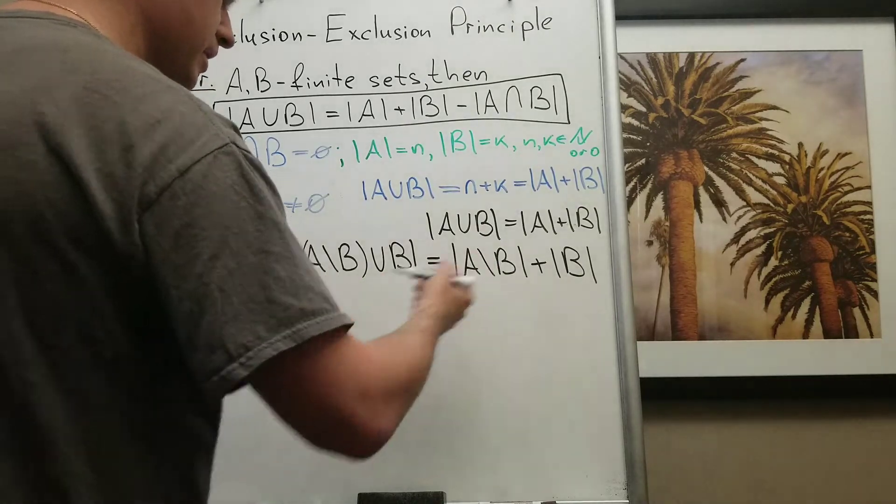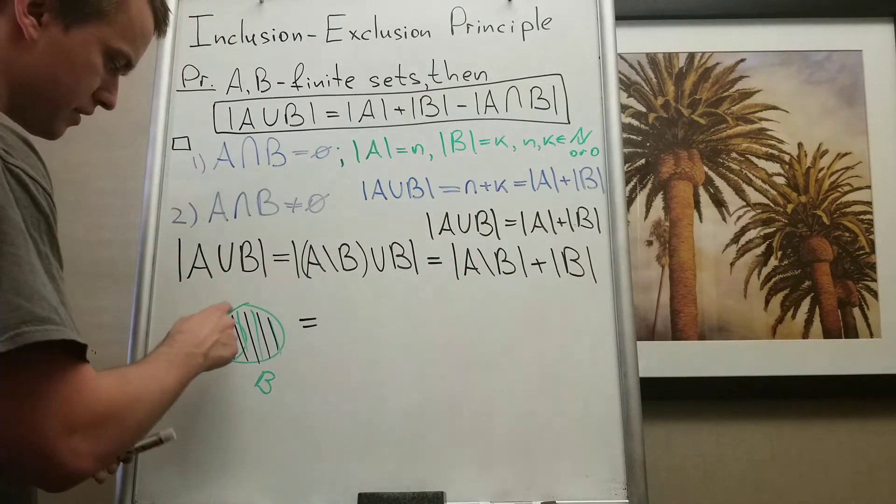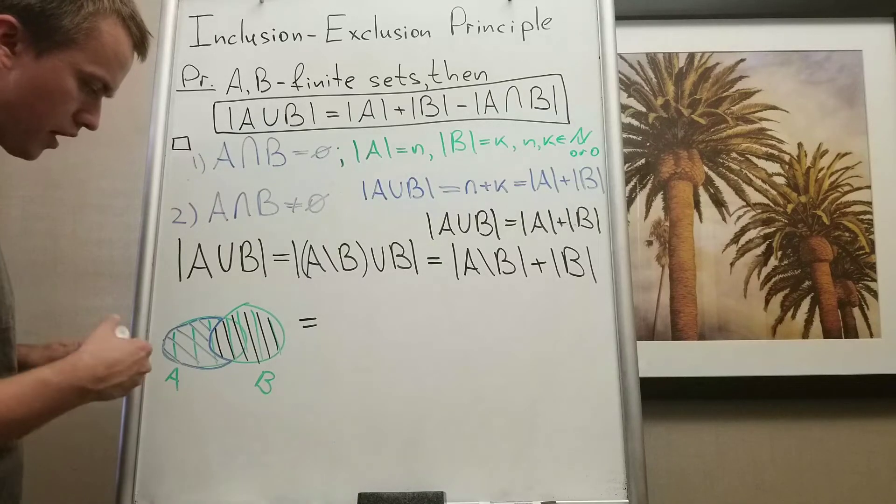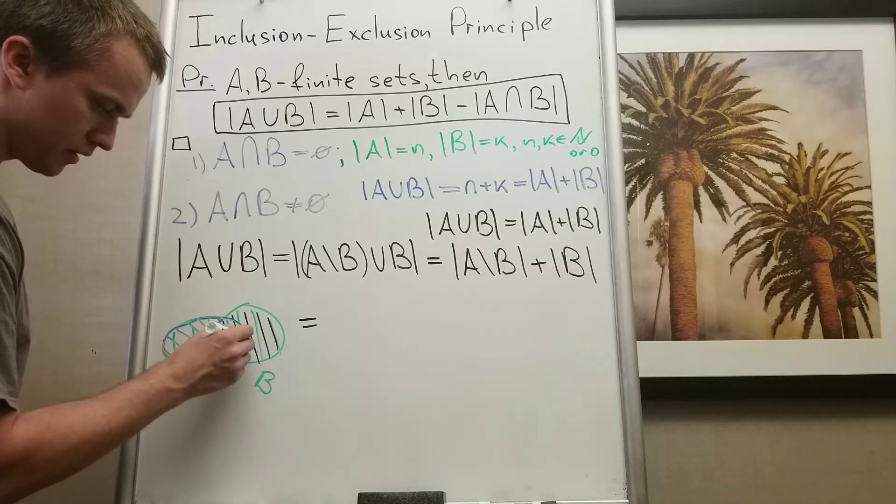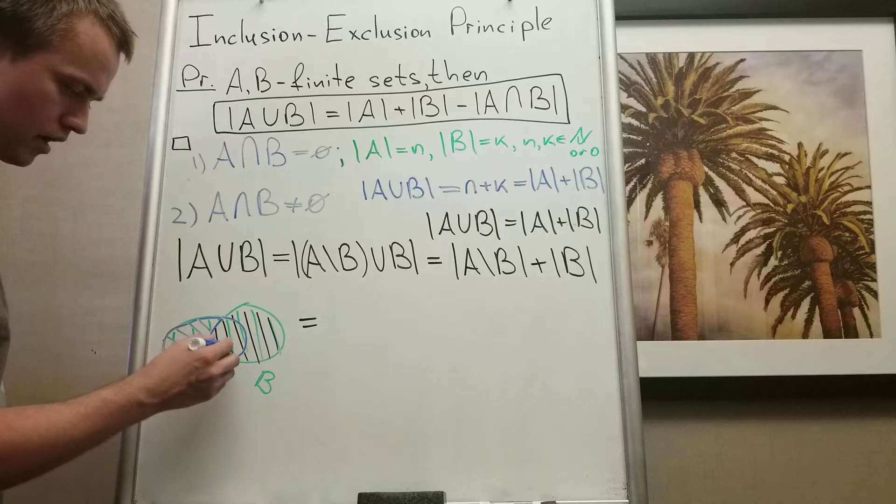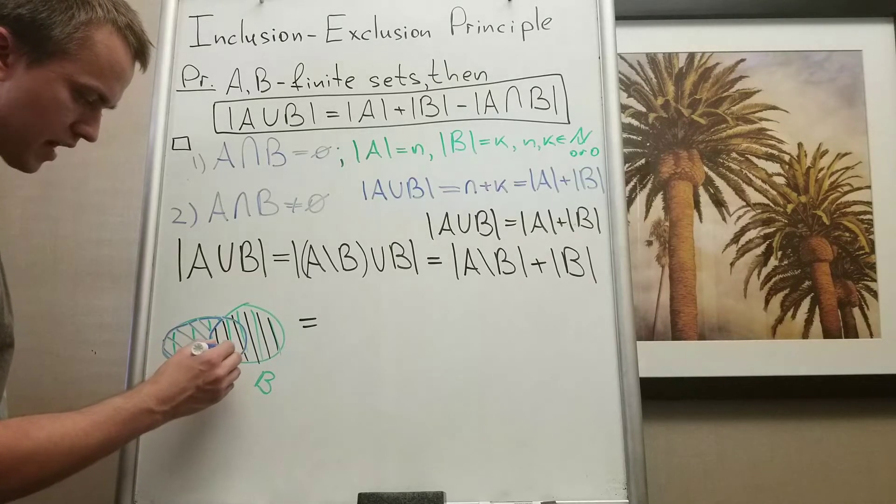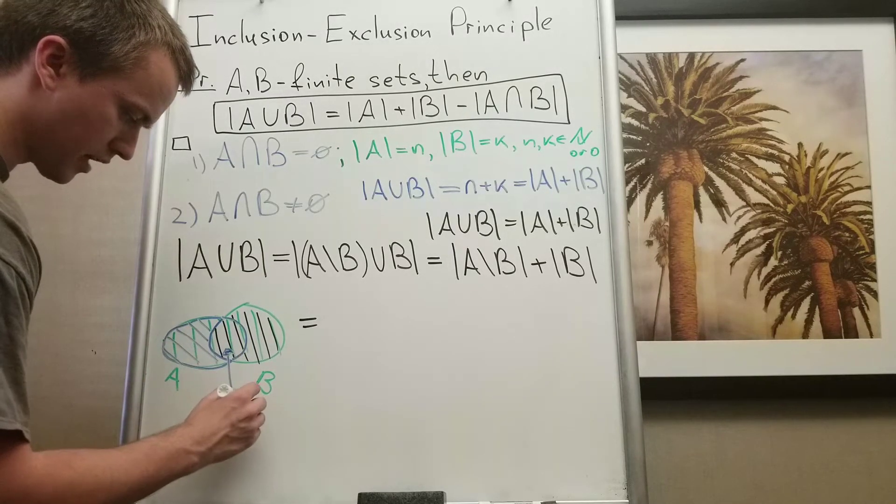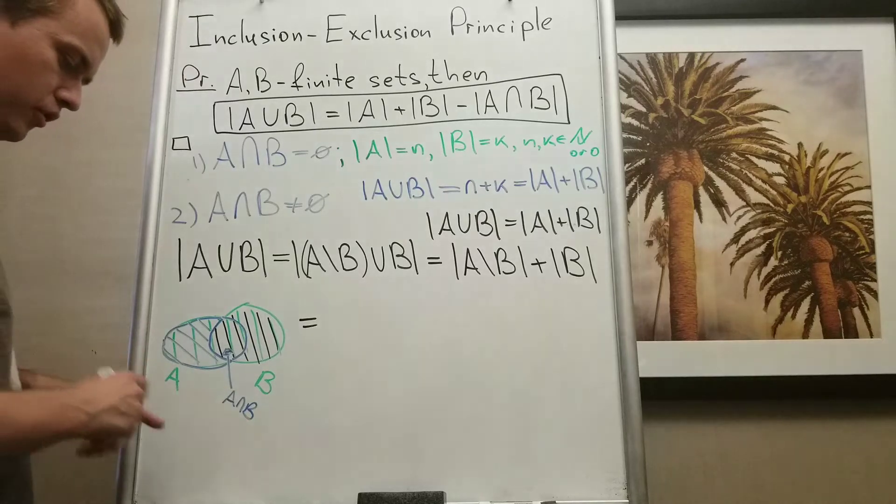And what is A minus B? A minus B is this part. So if I want this part complete to A, I want to add this subset A intersection B.